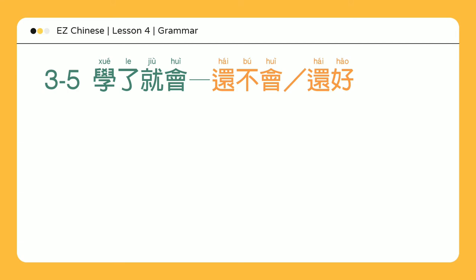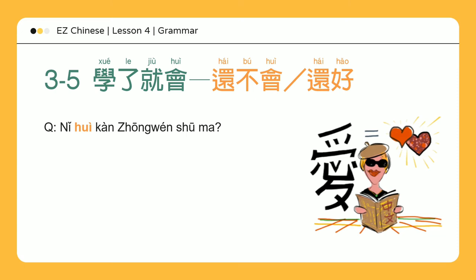看书: 你会看中文书吗? — Are you able to read books in Chinese? 会看一点，可是还不会写汉字 — I can read a little but still don't know how to write yet.